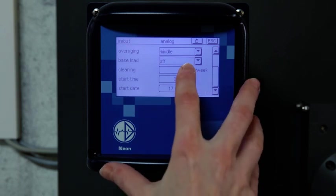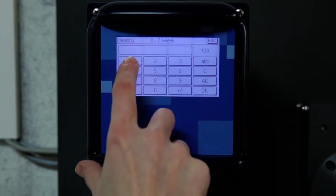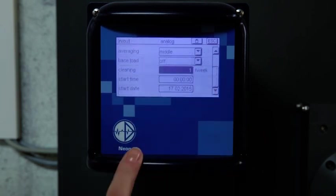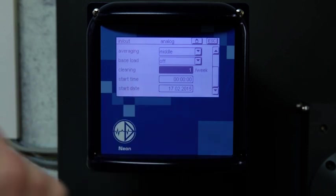Select the cleaning intervals. You can choose between zero and seven times per week. For most applications, one cleaning cycle per week has proven absolutely sufficient. We recommend carrying out cleaning during night hours, or at times when relatively low fluctuation can be expected.